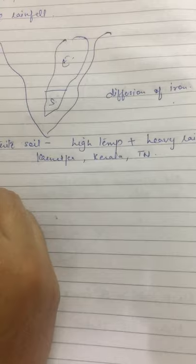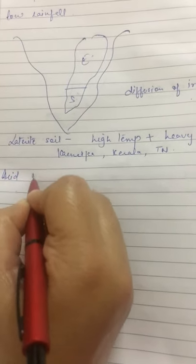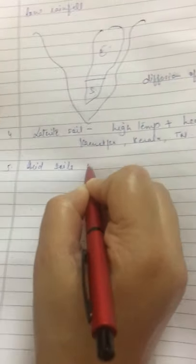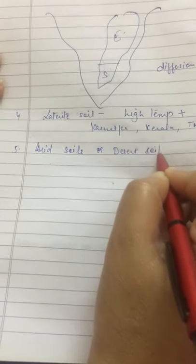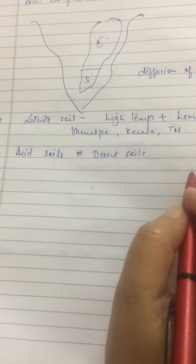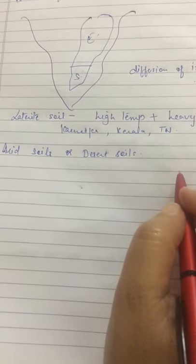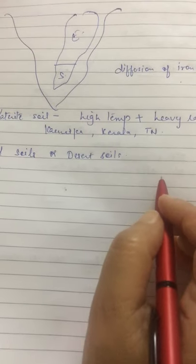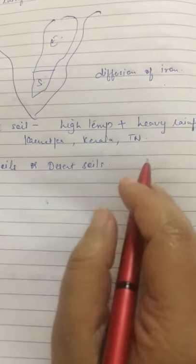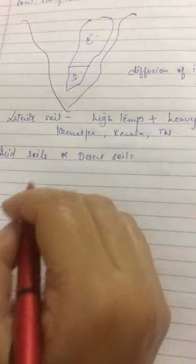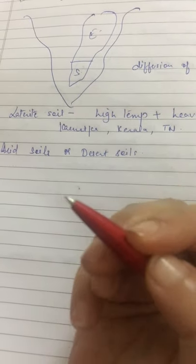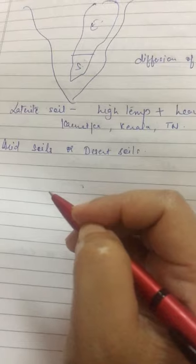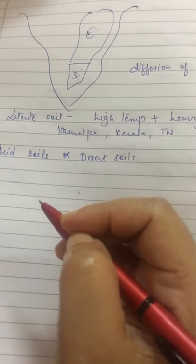Number 5 is Arid soil. Arid soils are also called desert soils. They are generally sandy in texture and ranges from red to brown in colour. Soil lacks humus and moisture due to the dry climate, high temperature. After proper irrigation, these soils become cultivable.